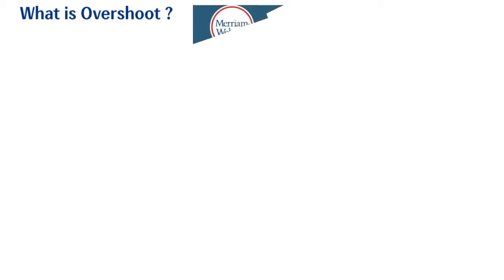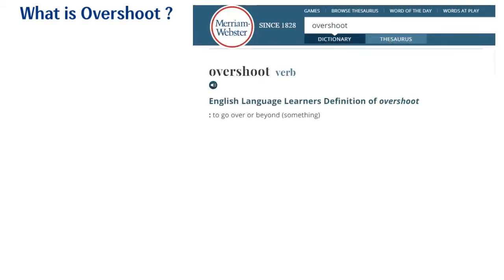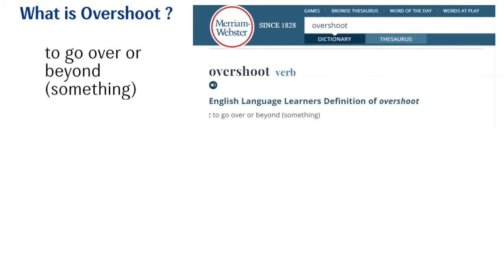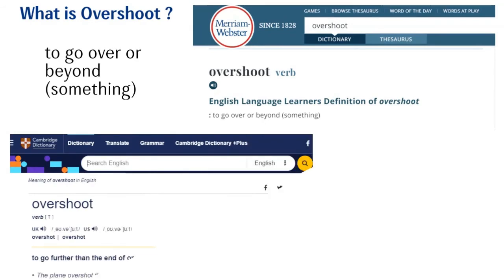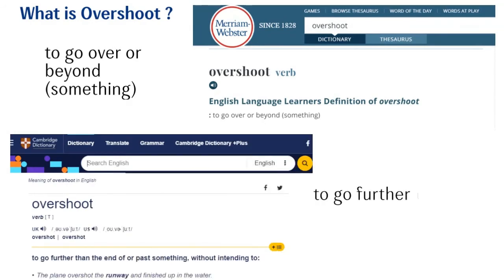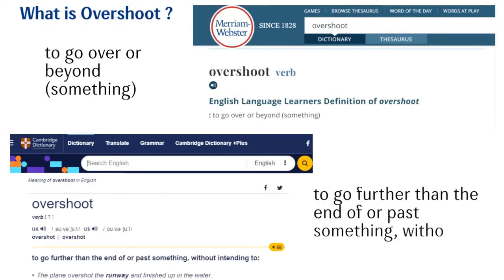So what is Overshoot? The dictionary definition is as follows. Merriam-Webster defines it as to go over or beyond something. Cambridge defines it as to go further than the end of, or past something, without intending to.